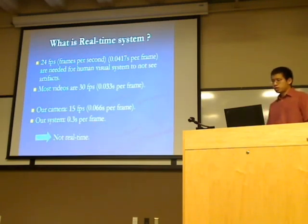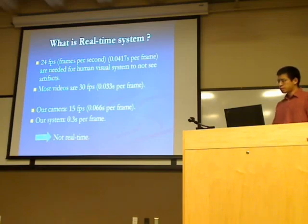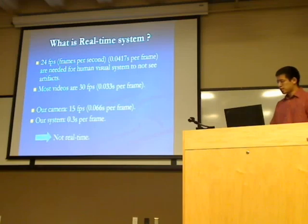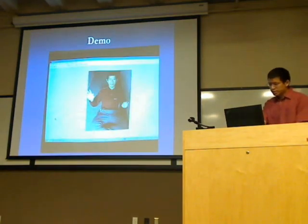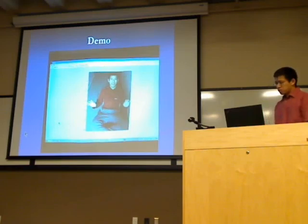A real-time system for the human visual system requires 24 frames per second, and most videos are at least 30 frames per second. Our camera runs at around 15 frames per second. Our system runs at 0.3 seconds per frame, so it is clearly not a real-time system. Here is a demo of our results.